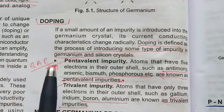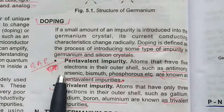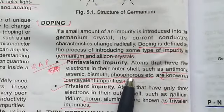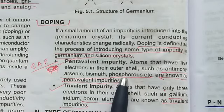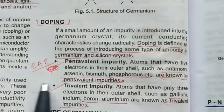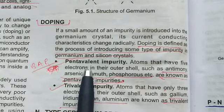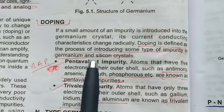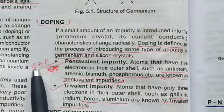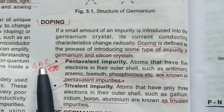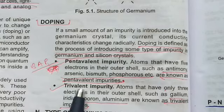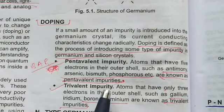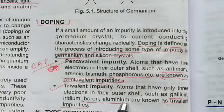When we add pentavalent impurity, which contains five electrons in the outer shell, examples include bismuth, phosphorus, arsenic, and antimony — this is pentavalent impurity which can be added to germanium or silicon crystals. There is also trivalent impurity, which contains three electrons in the outer shell, such as boron, aluminium, gallium, and indium. These are known as trivalent impurity.